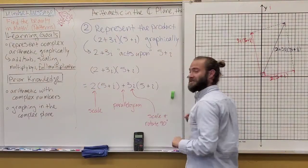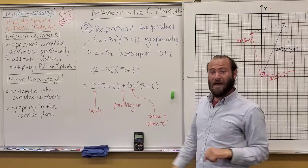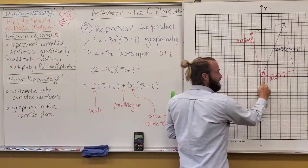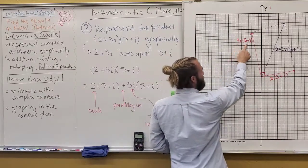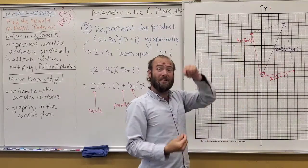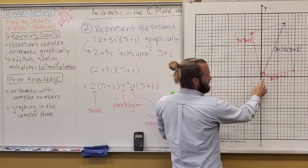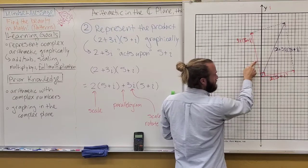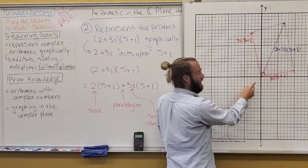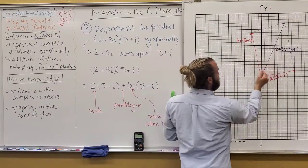2 times 5 plus i just means taking 5 plus i and doubling its magnitude. So, here is 2 times 5 plus i. Well, 3i times 5 plus i means tripling its magnitude but you also have to rotate 90 degrees. So, instead of 5 plus i, it would be negative 1 plus 5i when you rotate and then you have to triple that, right? So, rotate and triple.